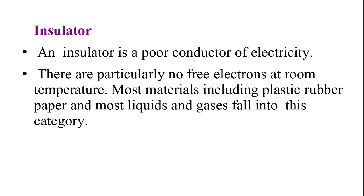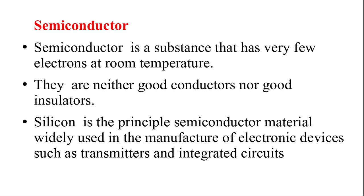An insulator is a very poor conductor — or we can say it does not have any conducting ability because it does not have any free electrons at room temperature. Examples are rubber, plastic, and wood. A semiconductor is a different kind of substance — neither a conductor nor an insulator. It works as an insulator or as a conductor under particular conditions, having both some free electrons and insulating properties. Semiconductors are used in most electronic devices like ICs, integrated circuits, and transistors.